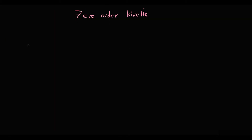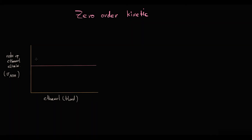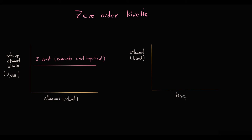We can depict this with a graph: on one axis is ethanol concentration in the blood, and on the other is the rate of ethanol elimination — essentially the speed of alcohol dehydrogenase. The graph shows that the speed of ADH is constant no matter how much alcohol is in the blood. Similarly, plotting ethanol concentration over time gives a straight line, showing that the enzyme eliminates the same amount of ethanol from the blood per unit time.